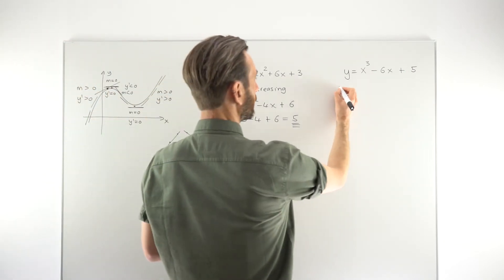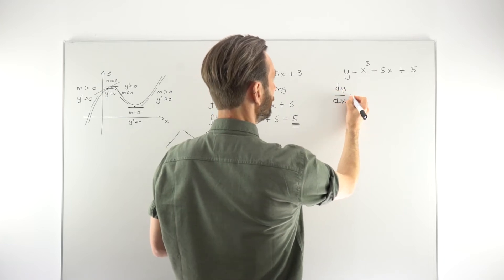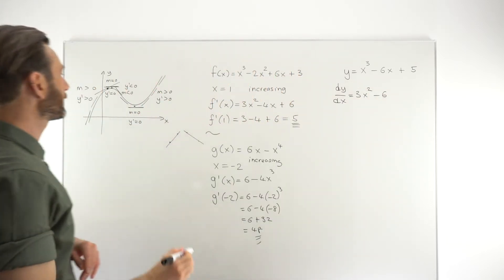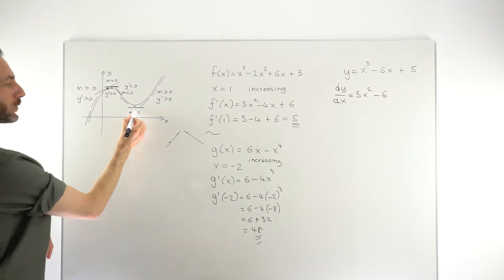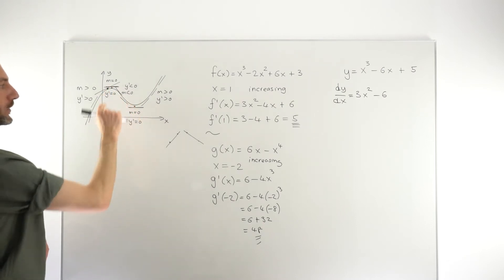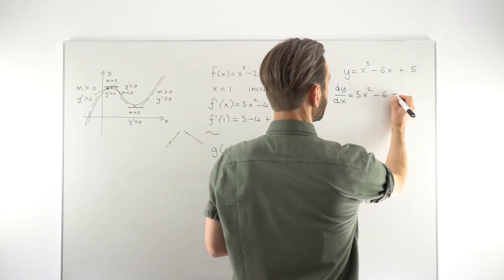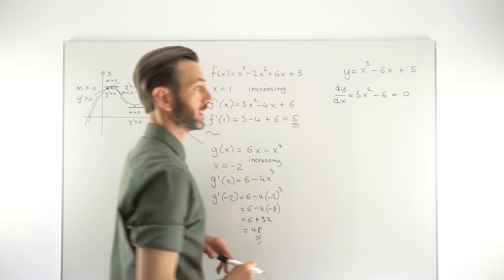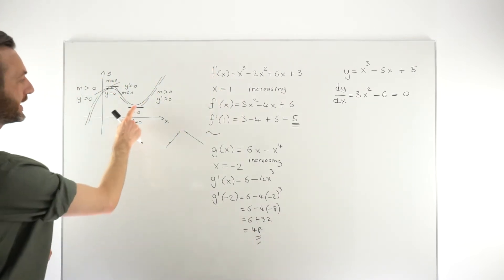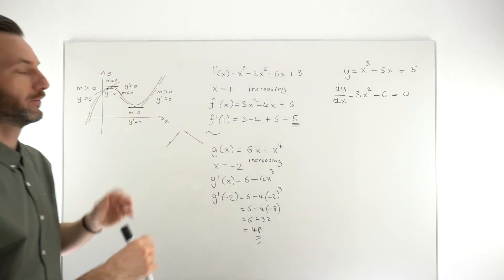We take the derivative: dy/dx = 3x² − 6, using the power rule. At the stationary points — the turning points where the graph changes direction — the derivative is zero. Those stationary points are really the key to knowing where the function is increasing and decreasing over a range of values, because everything changes at those points.